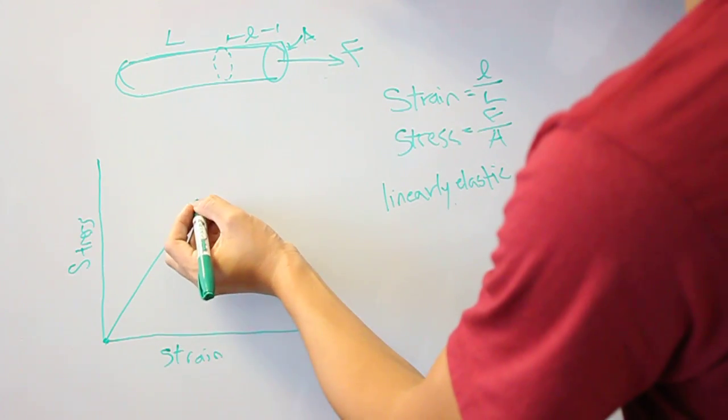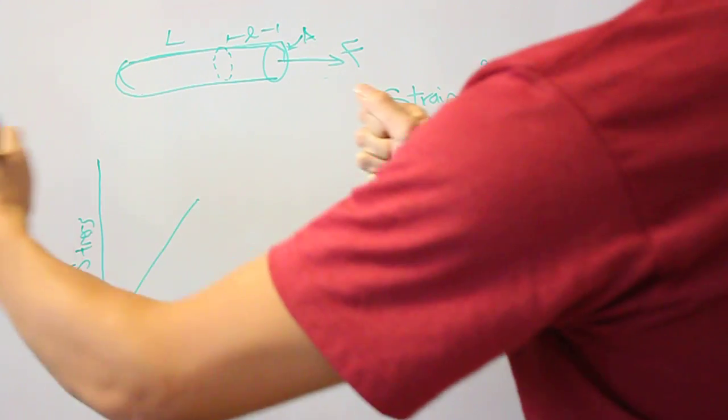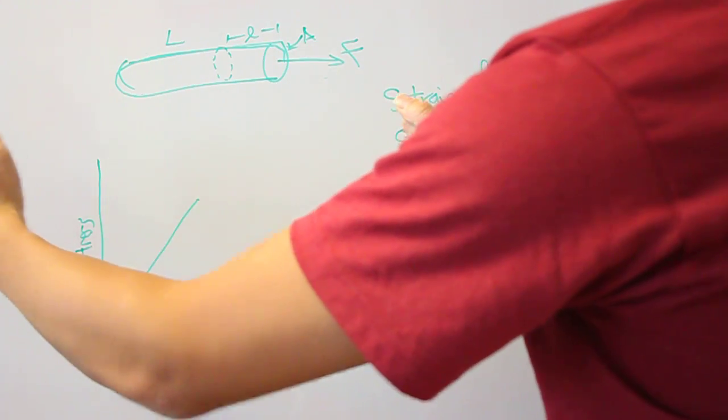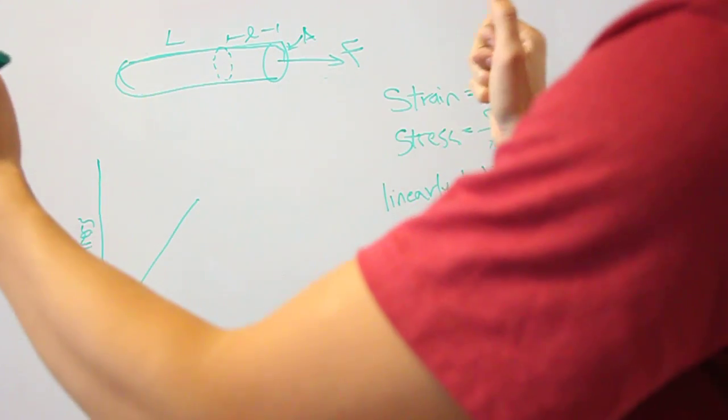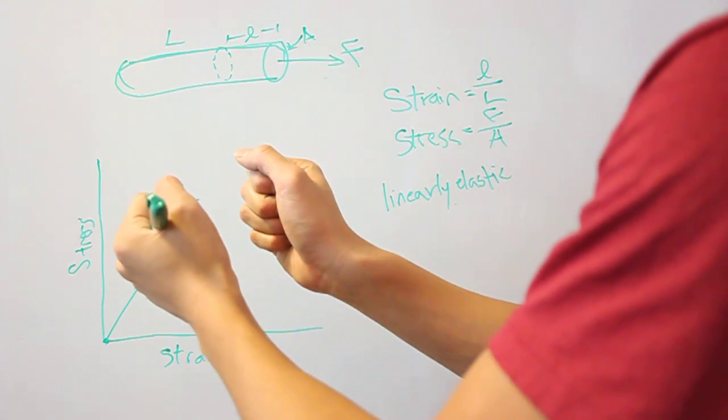Now, the best example of this is a rubber band, because if you stretch that rubber band, you're subjecting it to a force, and it's increasing its length. But the second you snap back, that rubber band returns to its original length.